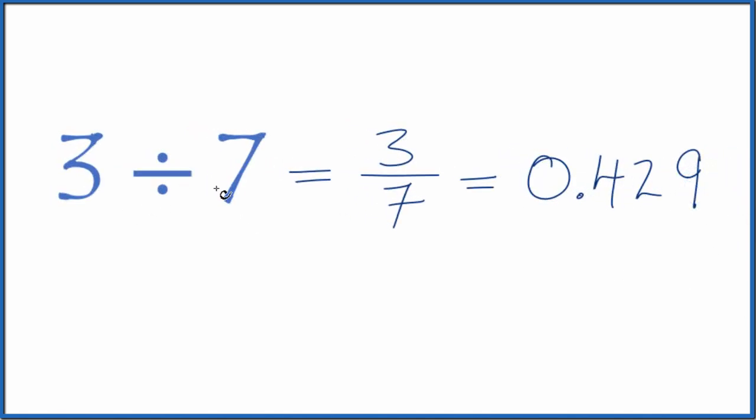So 3 divided by 7 is equal to the fraction 3 sevenths or a decimal 0.429. This number is not exact, though. We've rounded this.